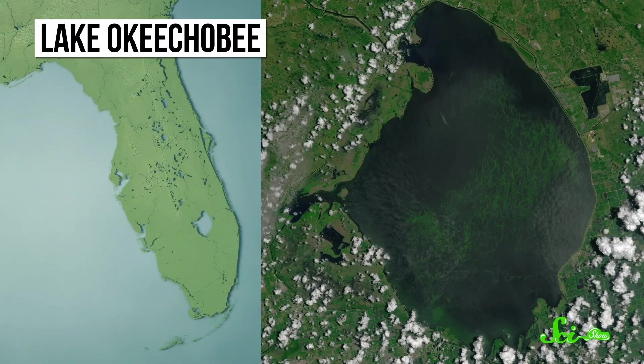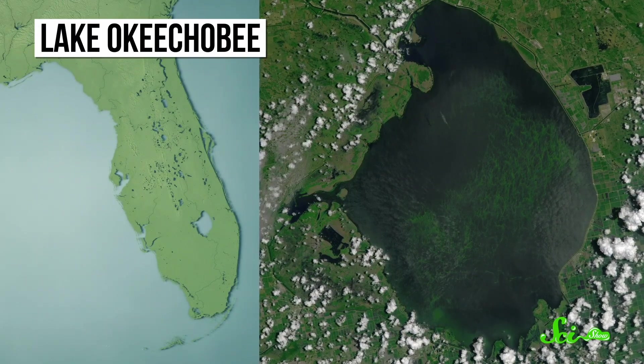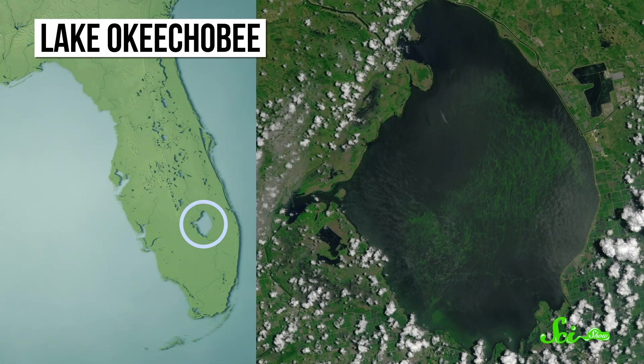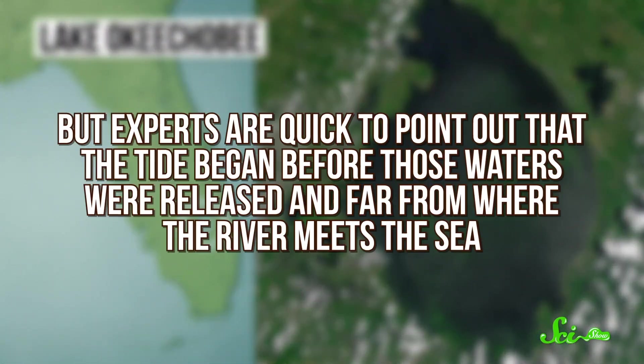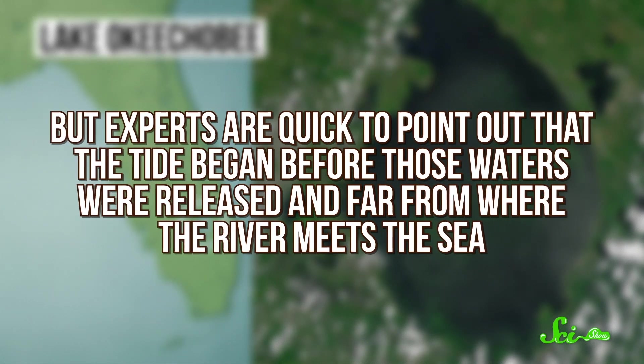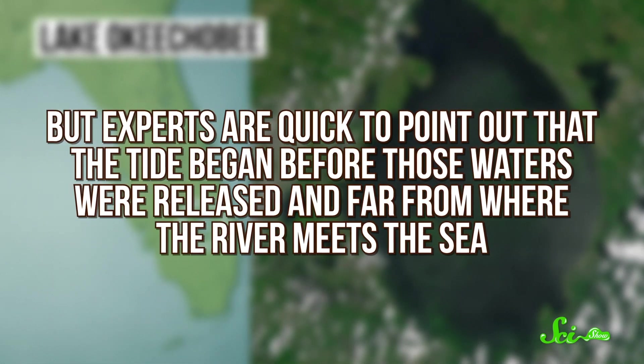There's a lot of internet speculation that particularly polluted waters from Florida's Lake Okeechobee, which were released down a river this summer, are to blame for this year's red tide. But experts are quick to point out that the tide began before those waters were released, and far from where the river meets the sea.